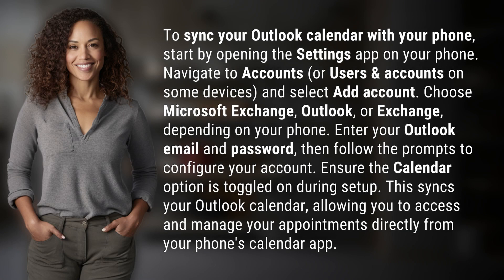To sync your Outlook calendar with your phone, start by opening the Settings app on your phone. Navigate to Accounts, or Users and Accounts on some devices, and select Add Account.